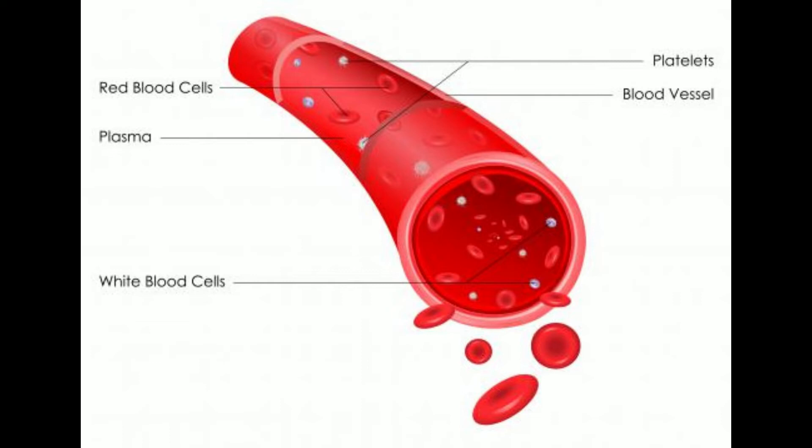What differentiates them from other blisters is the fact that the trauma caused the blood vessels under the skin to rupture. The most common area for these blisters to appear is on the feet, which are particularly prone to blistering. They are often caused by shoes that do not fit properly and pinch or put pressure on the feet. Wearing properly sized shoes reduces the chance of developing any type of blister as well as other foot problems.